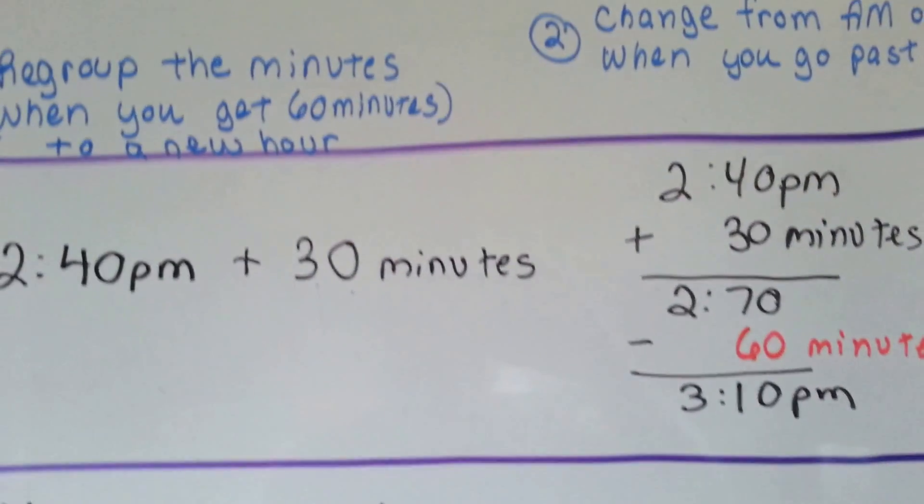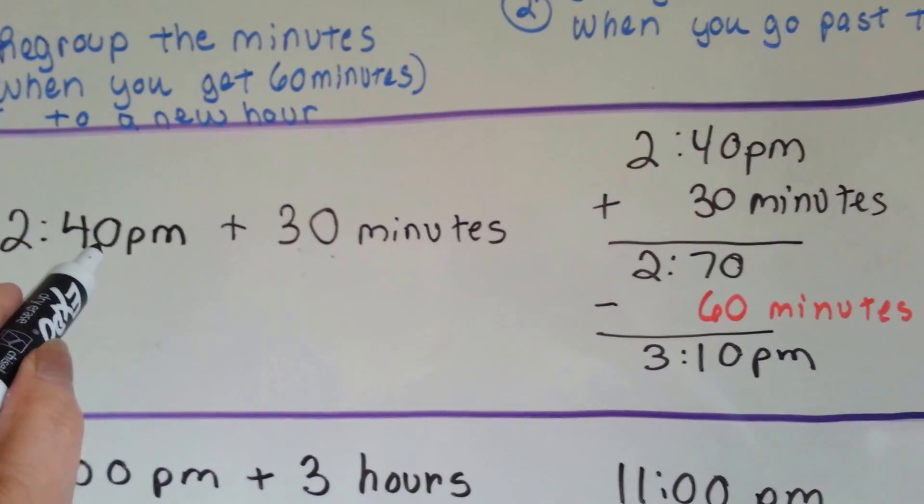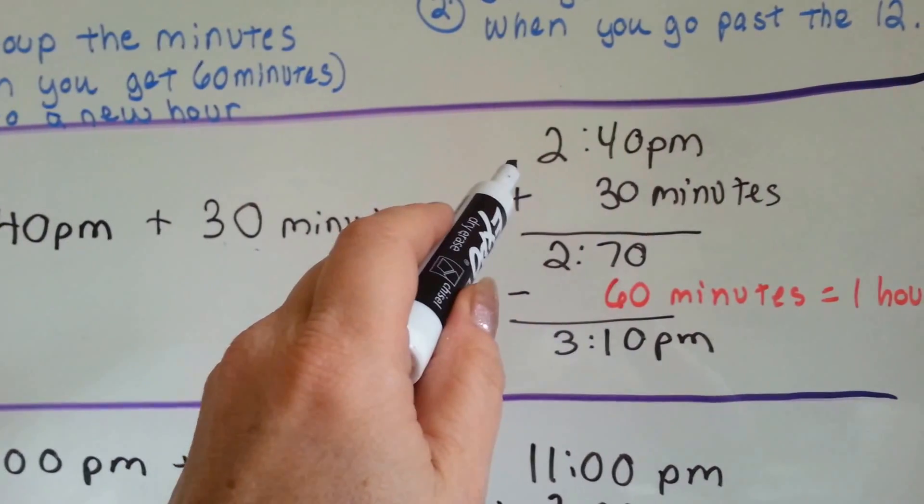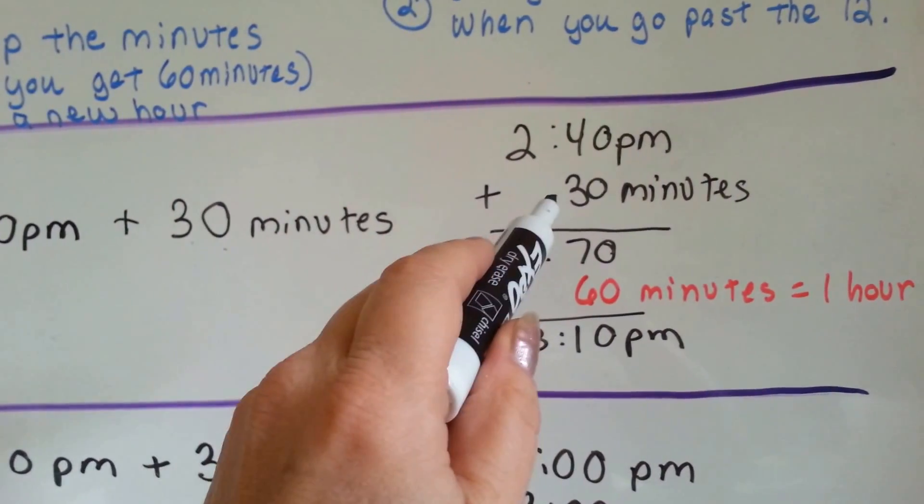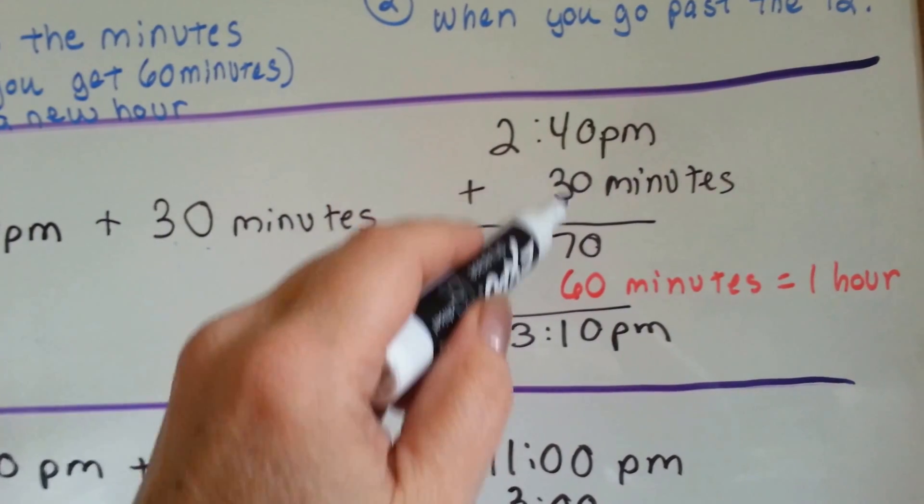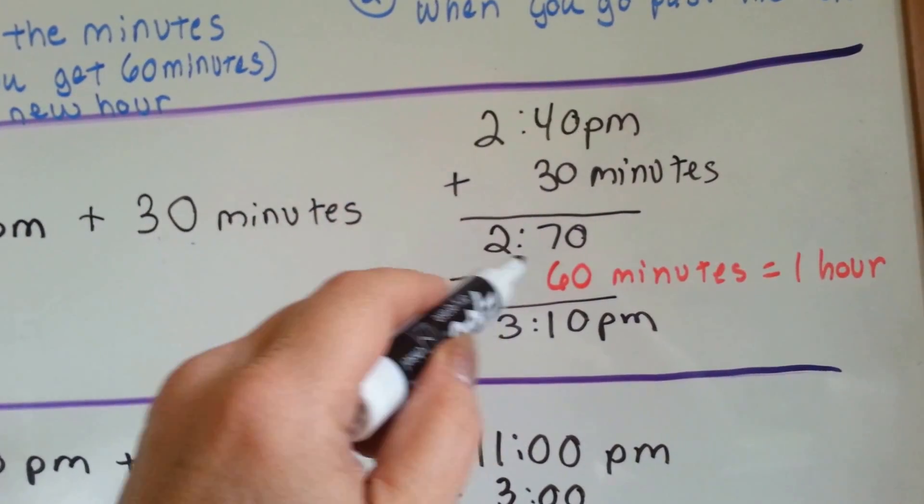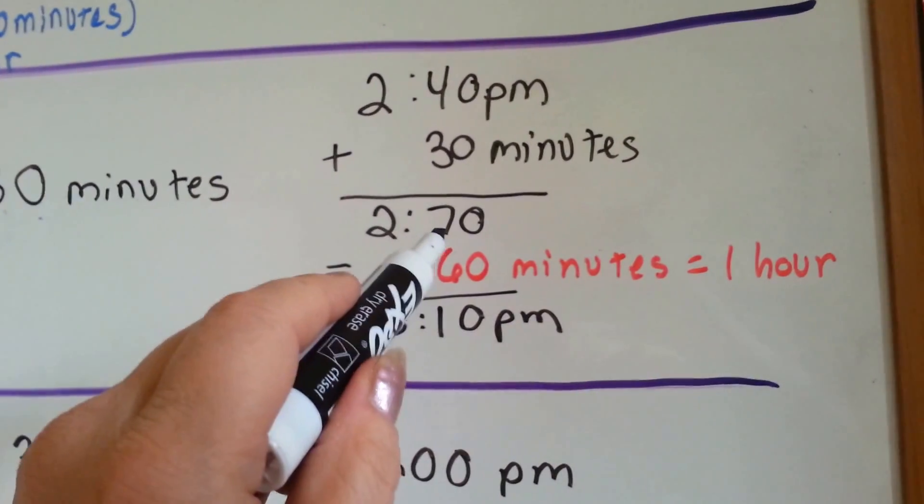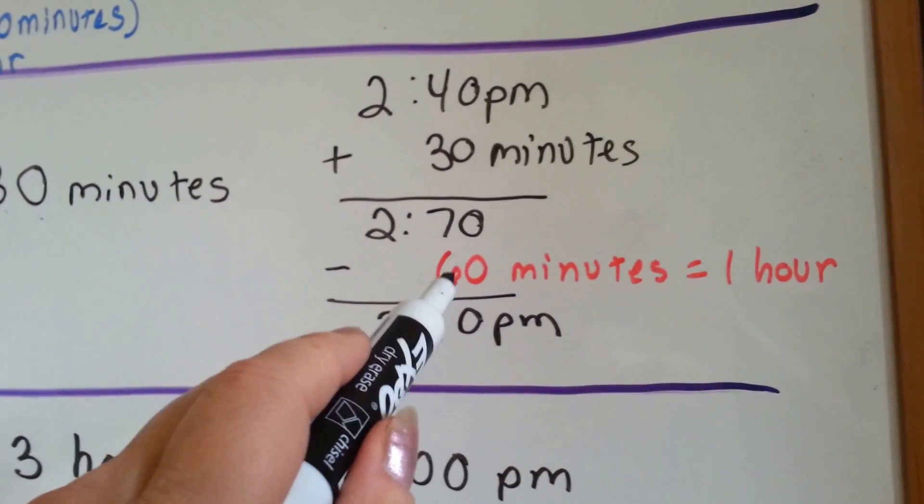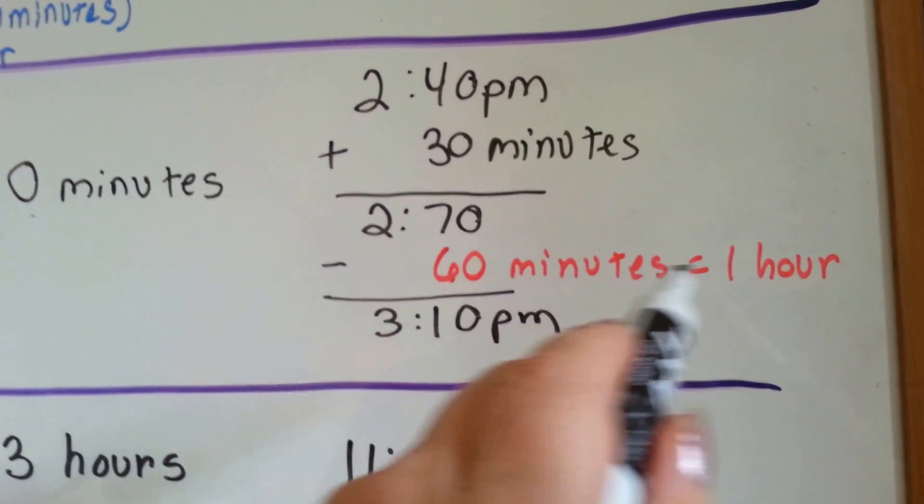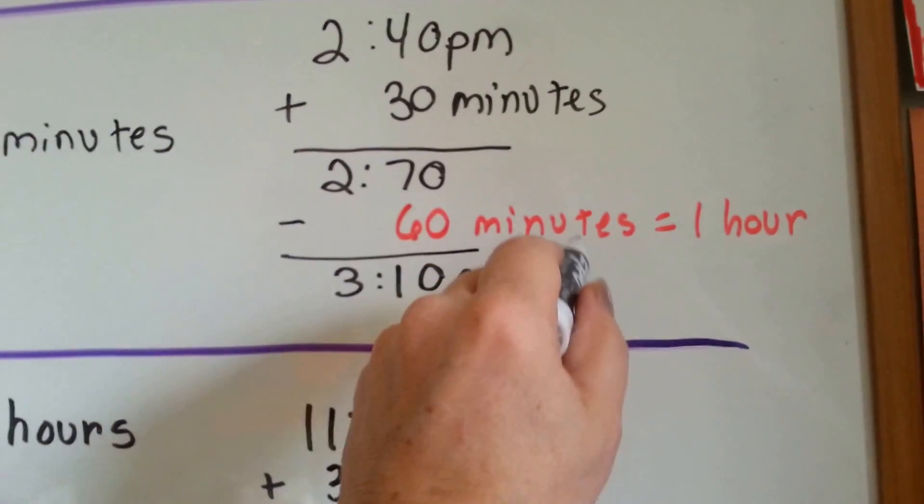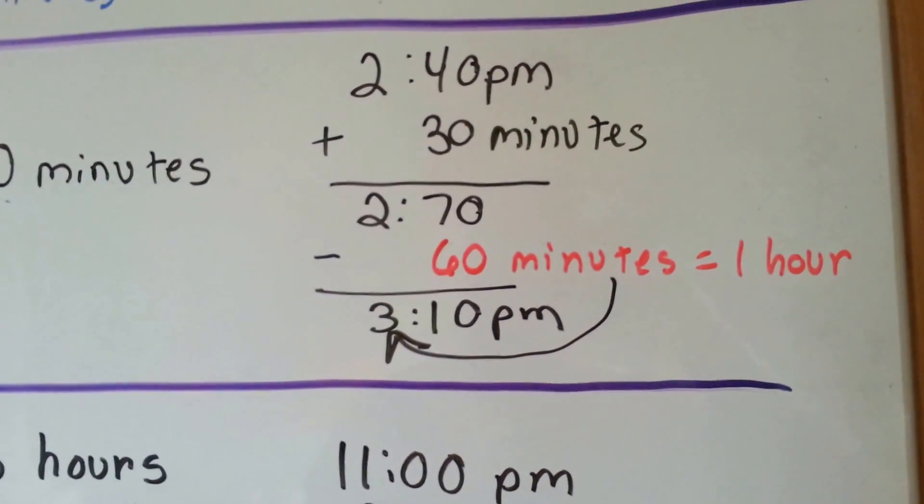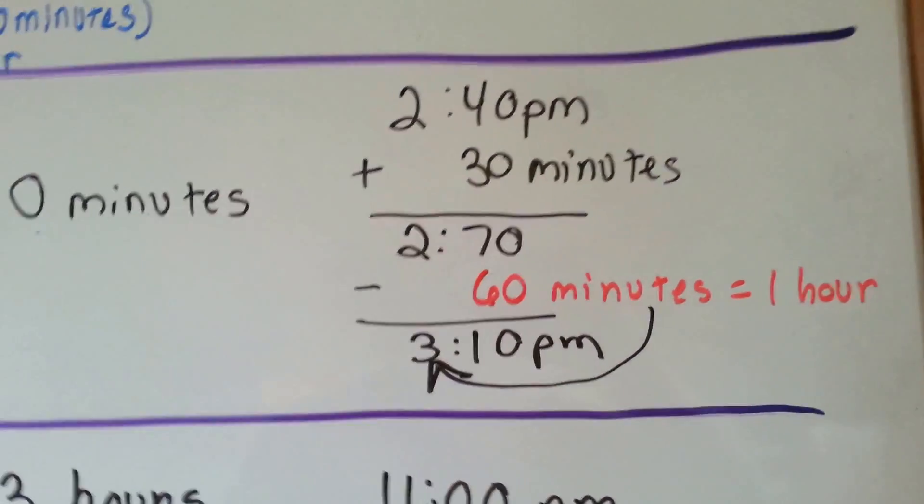So, let's take a look at this one. It's 2:40 PM, and we're going to add 30 minutes. 2:40 PM plus the 30 minutes. 0 and 0 is 0, 4 and 3 is 7, and we bring the 2 down. Now, there's no such thing as 70 minutes on a clock, so we need to regroup 60 minutes of an hour to the hour side. And we do. And we get 3:10 PM. Let's try another one.